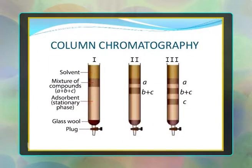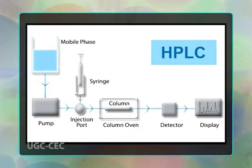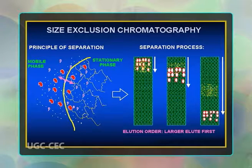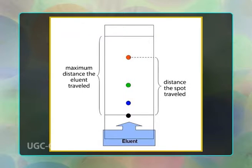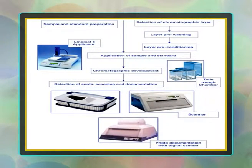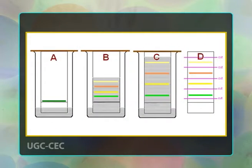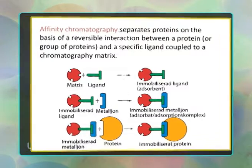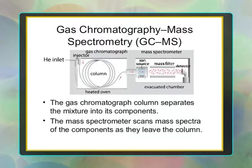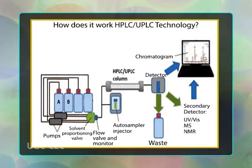The 11 practical types are: column chromatography, high performance liquid chromatography (HPLC), gas chromatography (GC), ion exchange chromatography, size exclusion chromatography, thin layer chromatography (TLC), high performance thin layer chromatography (HPTLC — similar to TLC but more efficient), paper chromatography, affinity chromatography, LC-MS (liquid chromatography combined with mass spectroscopy), GC-MS (gas chromatography combined with mass spectroscopy), and ultra high performance chromatography.